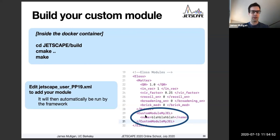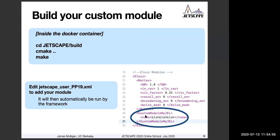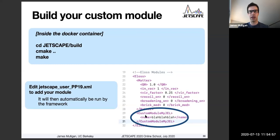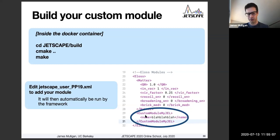You can also reduce your number of events if you want to avoid getting spammed with information — you can run one event or 10 events instead of a few hundred. As long as you see a bunch of parton output information being printed, you can quit immediately and things are working successfully.